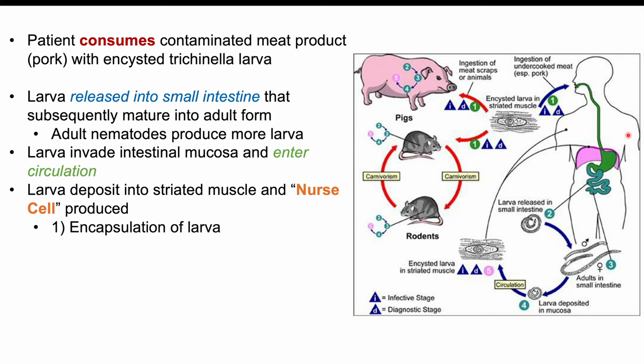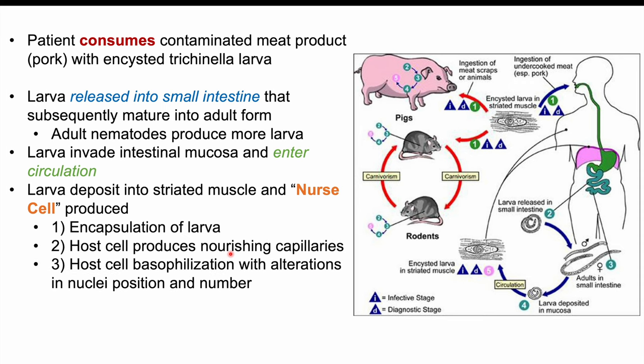When the larvae get into the striated muscle of the patient, the larvae itself becomes encapsulated. The host cell produces nourishing capillaries to feed the larvae. The host cell then undergoes basophilization, meaning the host cell itself becomes more basophilic.